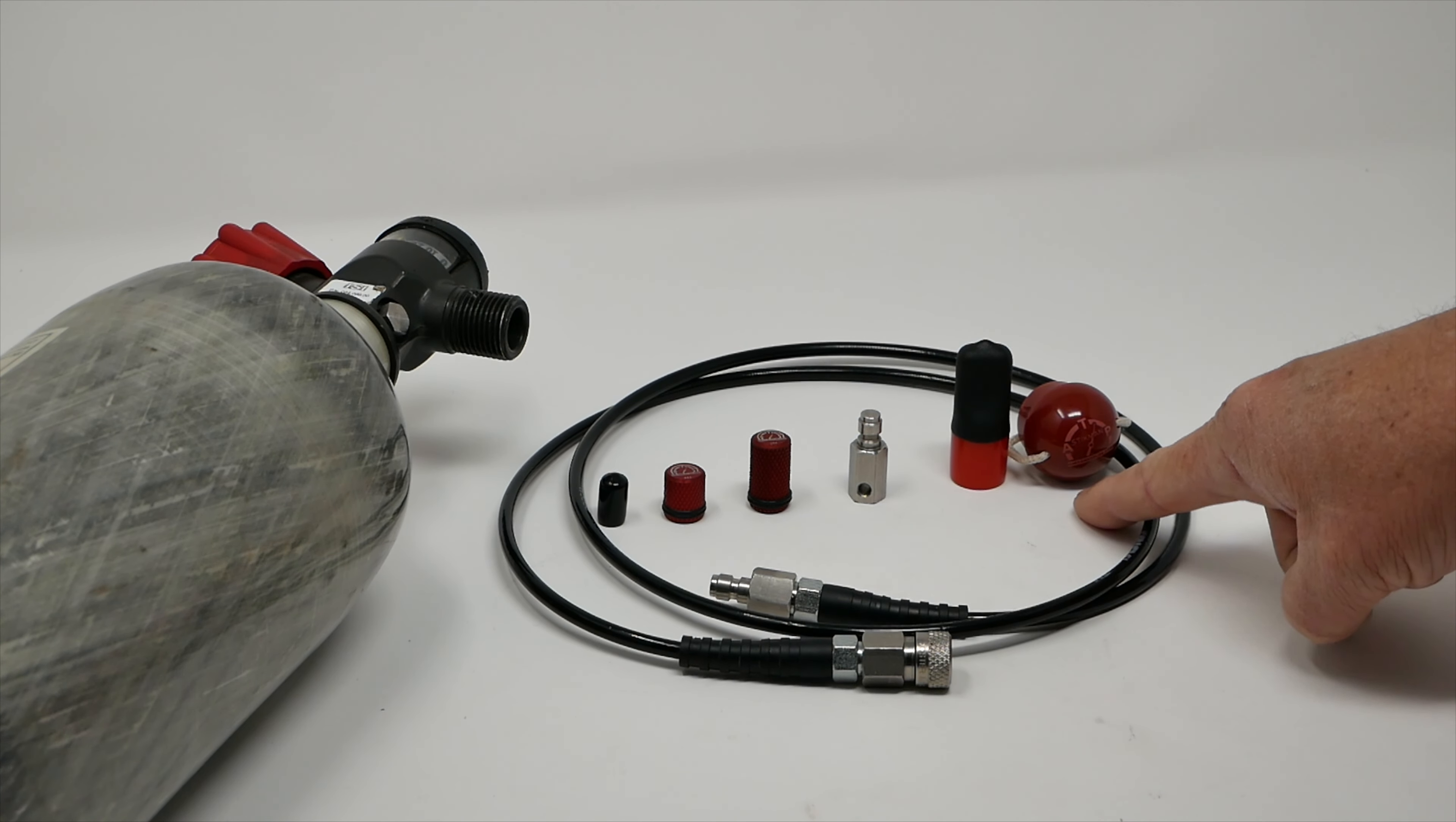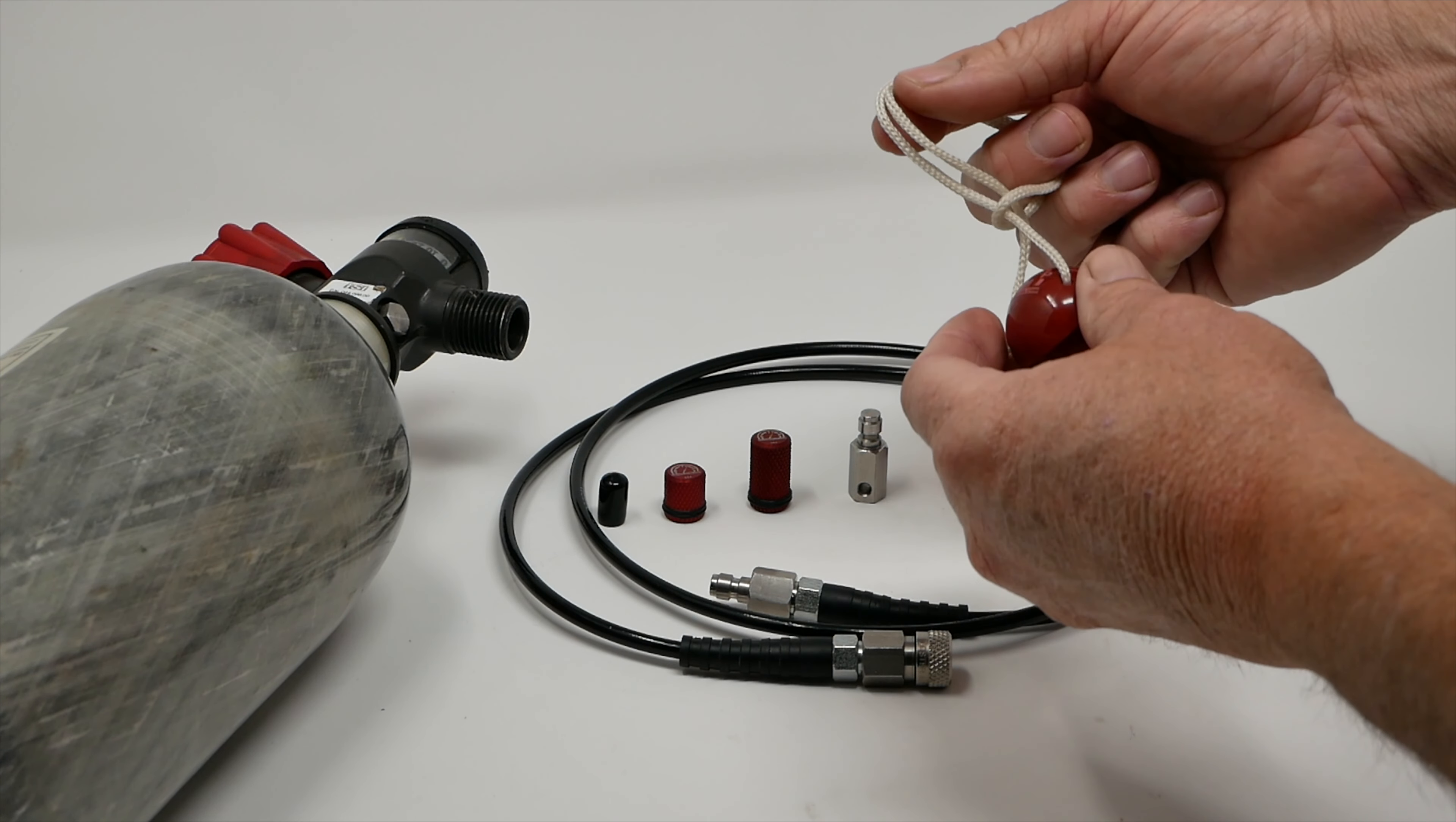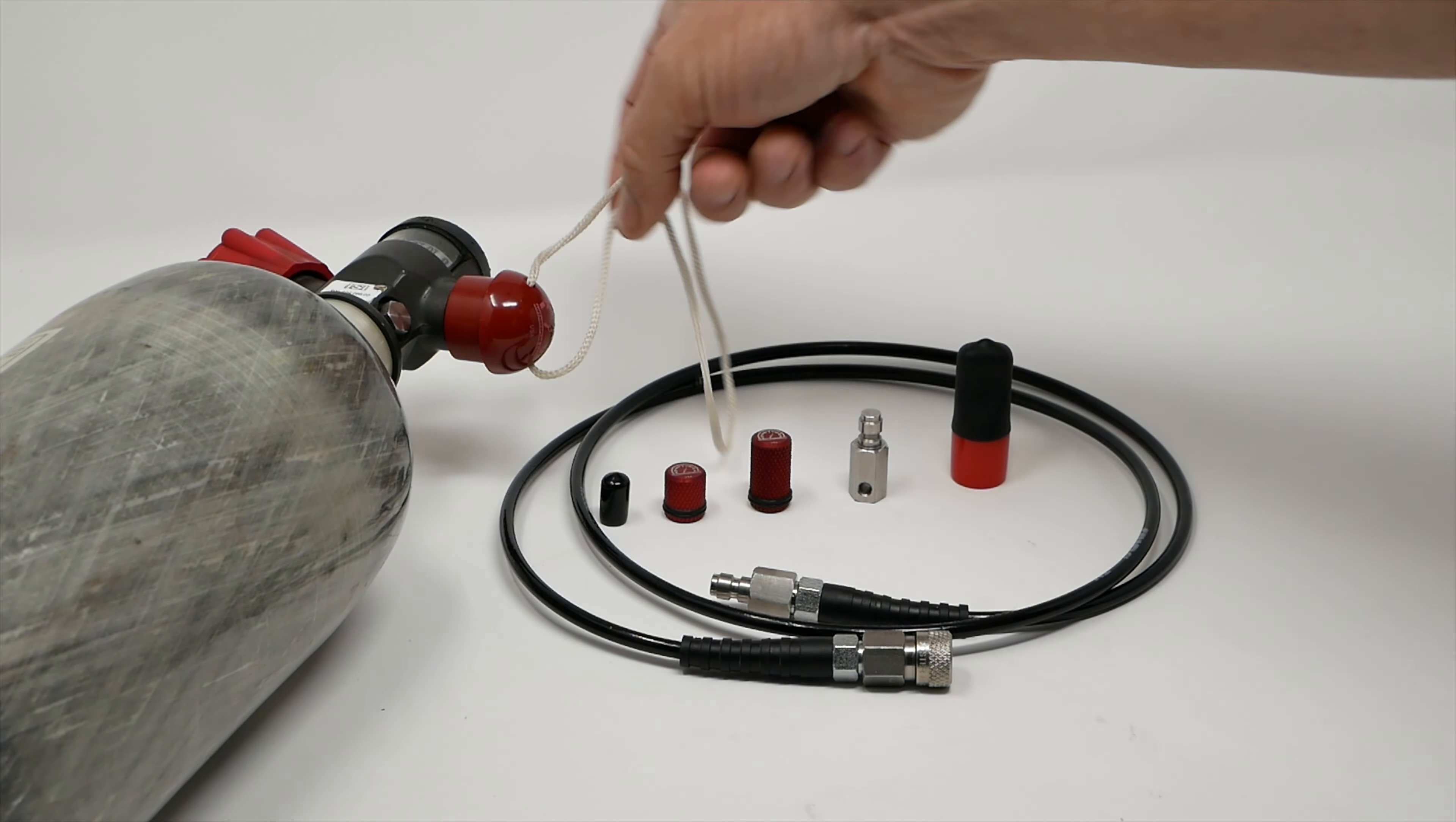This is our thread protector. This is made for SCBA tanks. I'll go ahead and talk about this first. So this has a lanyard. You just put this over the neck of the SCBA tank and then you can just slip this on just like that, and then when you pull it off it hangs by the lanyard.